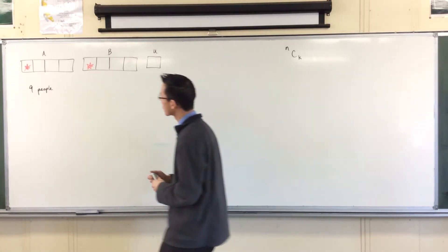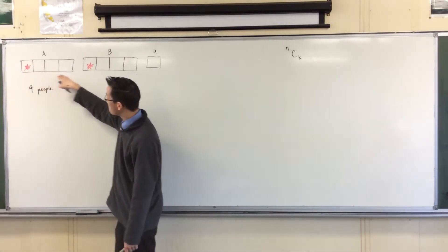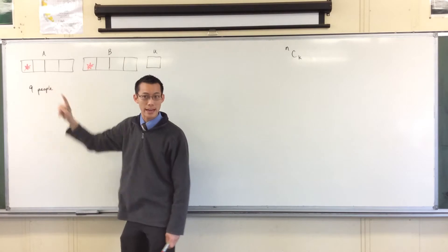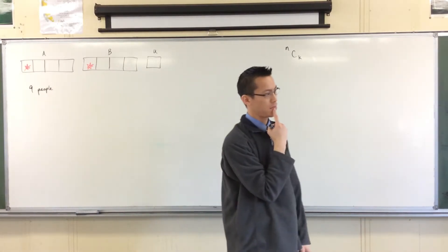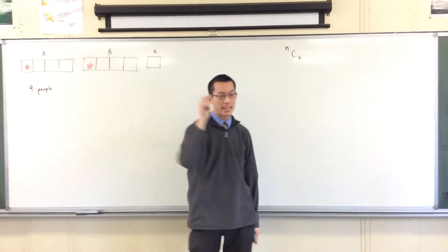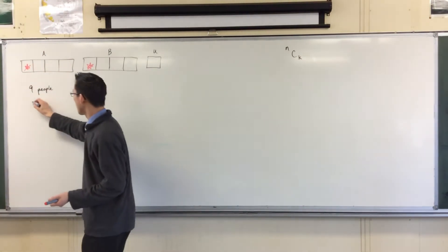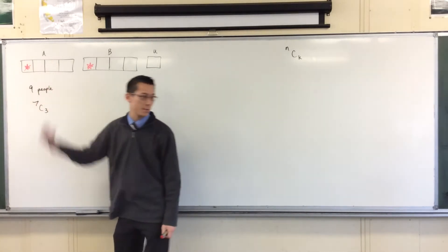So do you remember what we did at this point? You can do this in any order you like. You can say, alright, I've got three spots to fill here and how many people can I choose from? I had nine to start with. I've taken out those two, that gives me seven to choose from. So I can say seven C3, that gives me the first team.